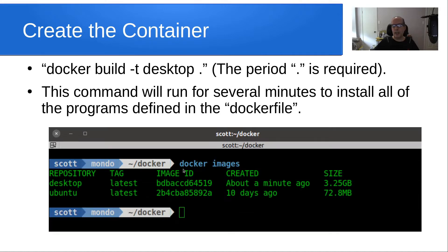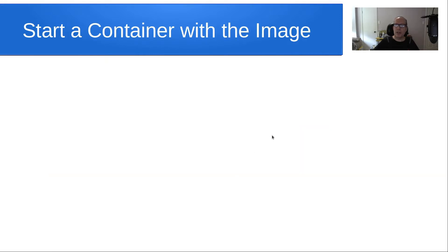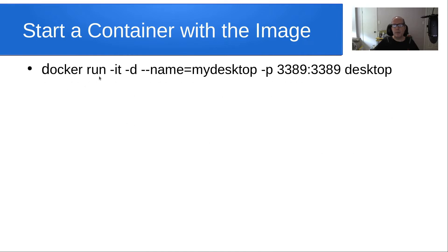Once that's completed, you can do a docker images command and you'll see that we have an Ubuntu image pulled down. Then we built on that Ubuntu image and created our own image called desktop. Now we want to start a container with the new image using the docker run command — interactive, detached, call it mydesktop, take internal port 3389 and map it to port 3389 on our Docker host, and use the image called desktop.